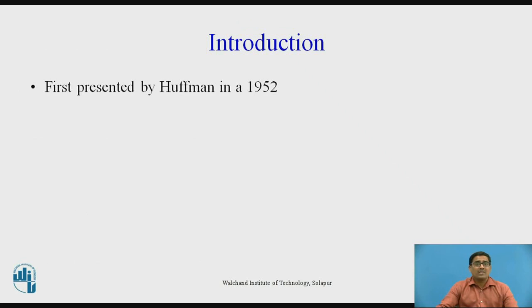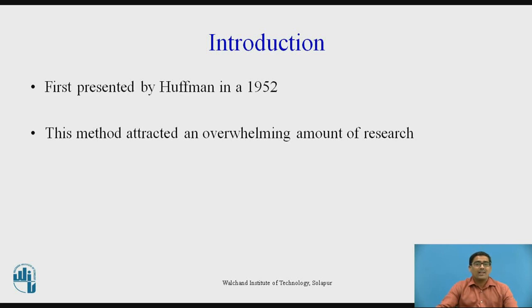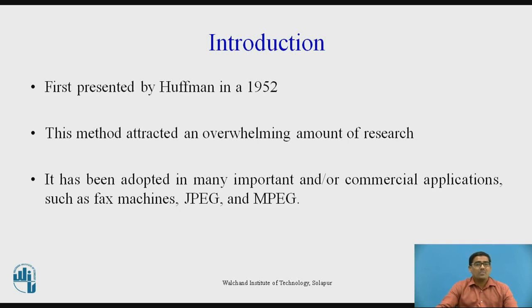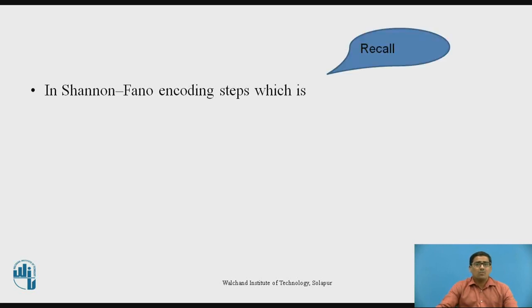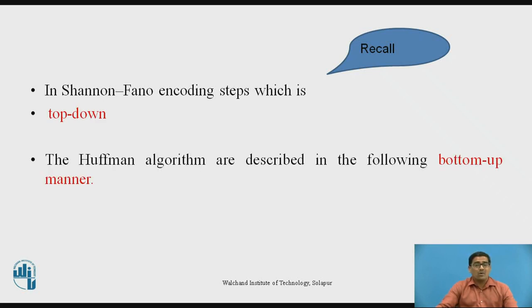Huffman coding was firstly presented by scientist Huffman in 1952. This method attracted an overwhelming amount of research. It has been adopted in many important and commercial applications such as fax machines, JPEG and MPEG images. In Shannon-Fano encoding, the steps go from top to down. But in Huffman algorithm, it is opposite to Shannon-Fano encoding — that is, from bottom to top manner.